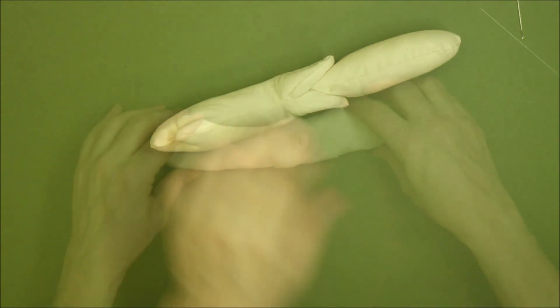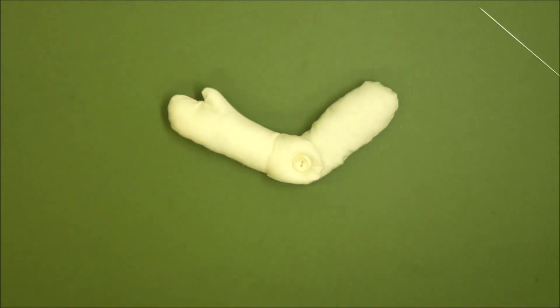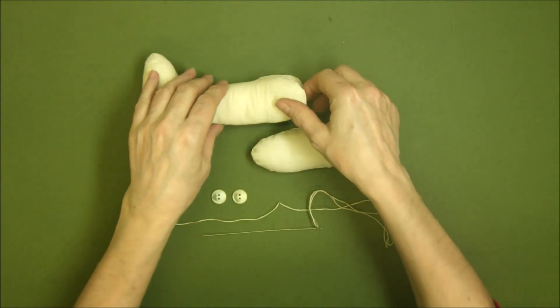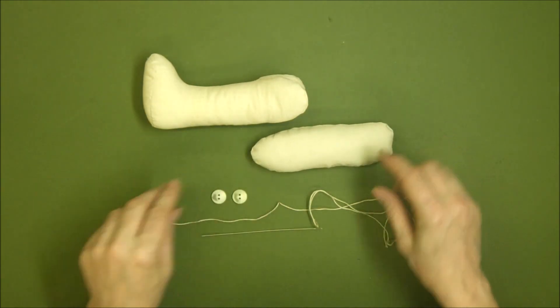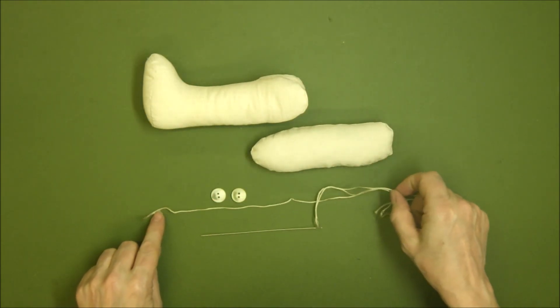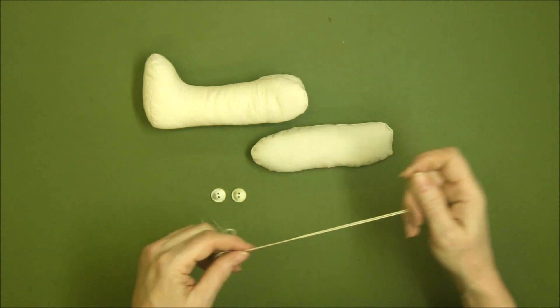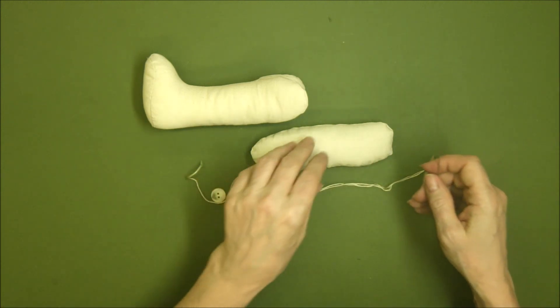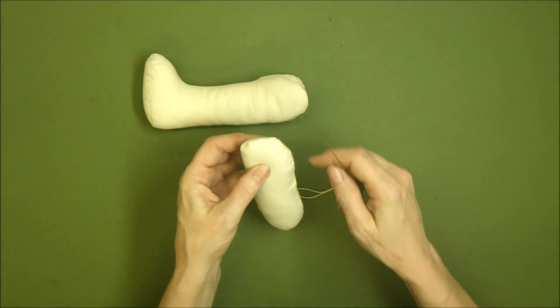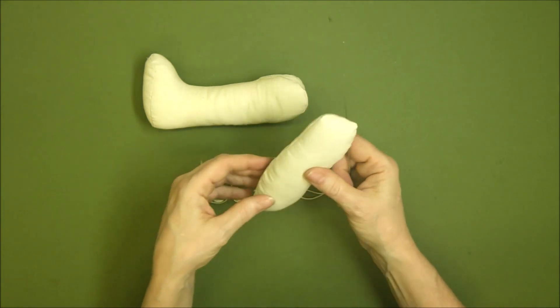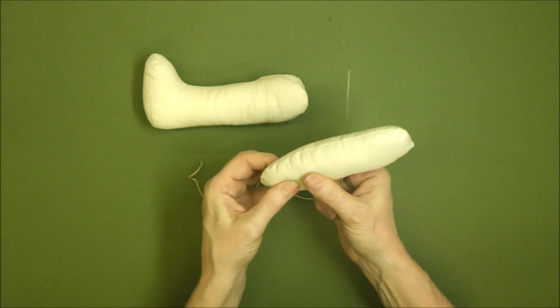Repeat it with the other arm, and then we're onto the legs. Same thing again - all the same pieces, lower and upper parts of the leg, the doll needle with thread and your two buttons. We identify the front and the back and the top and the bottom of our upper leg.